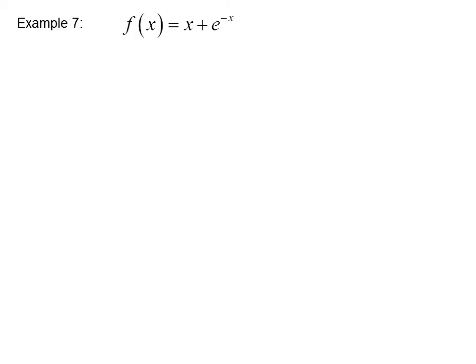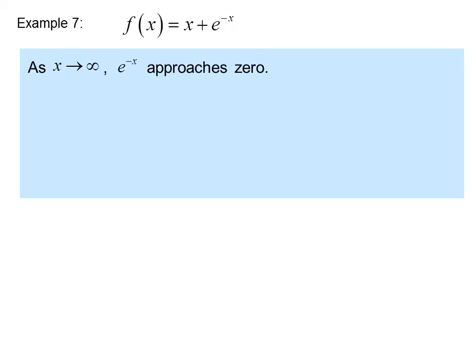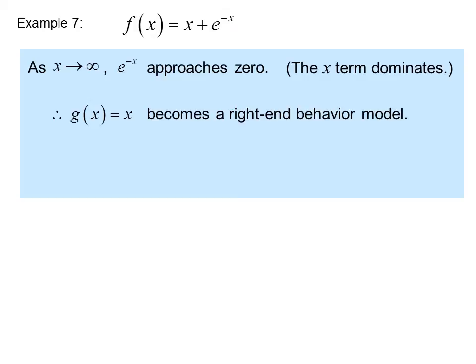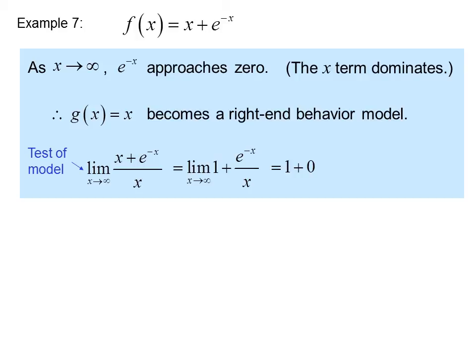Example 7: f of x equals x plus e to the negative x. As x approaches infinity, e to the negative x approaches 0, so the x term dominates. Therefore, g of x equals x becomes the right-hand behavior model. Our test confirms this: the limit as x goes to infinity of (x plus e to the negative x) over x equals the limit of 1 plus e to the negative x over x, which equals 1 plus 0, or 1. Therefore, our model is correct.